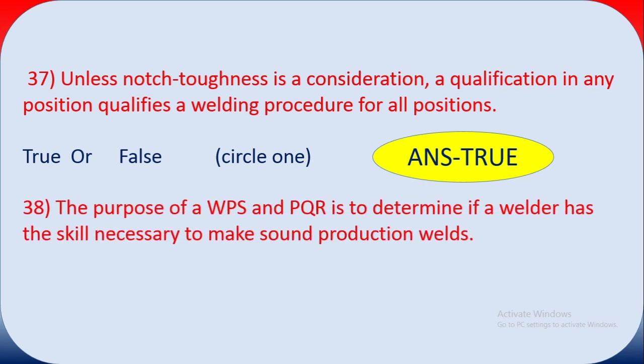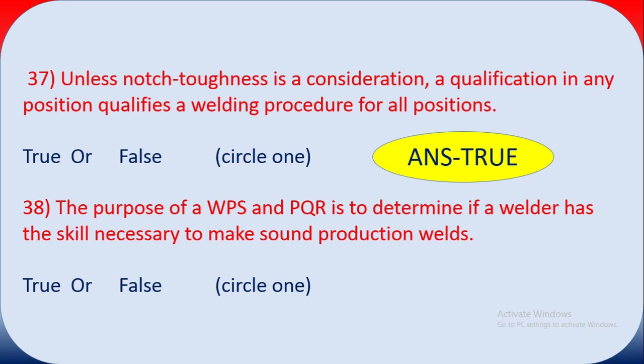Question thirty-eight: the purpose of a WPS and PQR is to determine if a welder has the skill necessary to make sound production welds — true or false? This is false. The WPS and PQR are used to determine the quality of welds and the mechanical properties of the welds — not specifically the welder's skill.